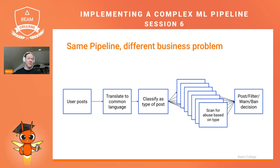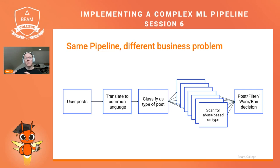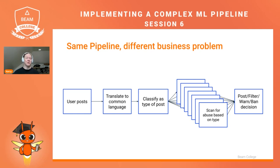Having that fine-tuned model per kind of post can be very valuable. The output of all these models is the same — it's a recommendation for what you do with the post: do you allow it to be posted, do you filter part of it, do you warn the user, do you ban the user? All these different fine-tuned models can take the same input and provide the same output, but because they're working on a smaller class of data, they can give a more accurate, tight output. And you can adapt it — if you get a new class of post, you can train a new model to deal with it.